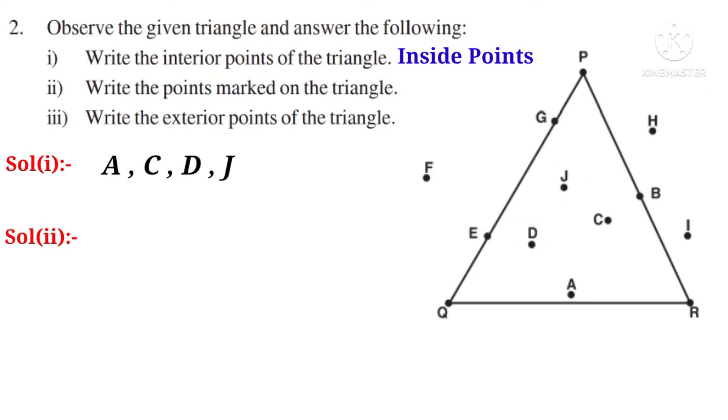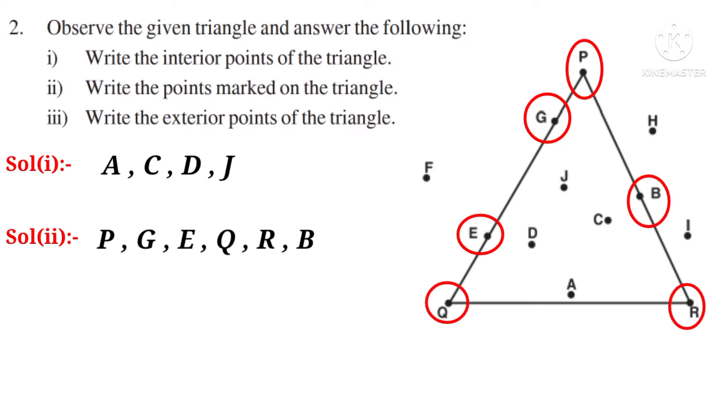Number 2. Write the points marked on the triangle. The points marked on the triangle are P, G, E, Q, R and B.